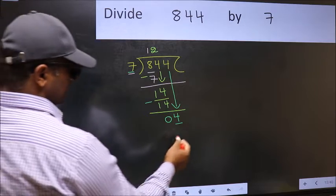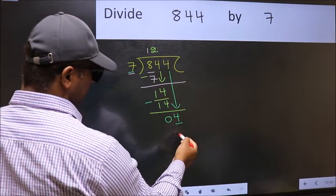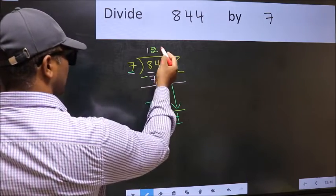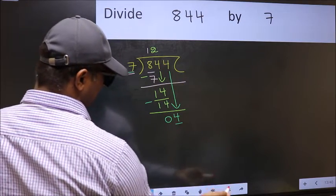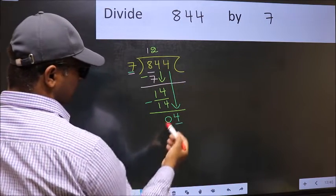Which number should we take here? If I take 1, we will get 7, but 7 is larger than 4.